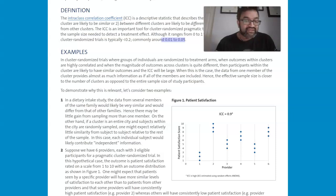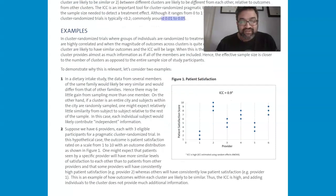But if a cluster is an entire city and subjects were randomly sampled, there might be relatively little similarity. So this is where this becomes important. Each individual subject would likely contribute independent information here.